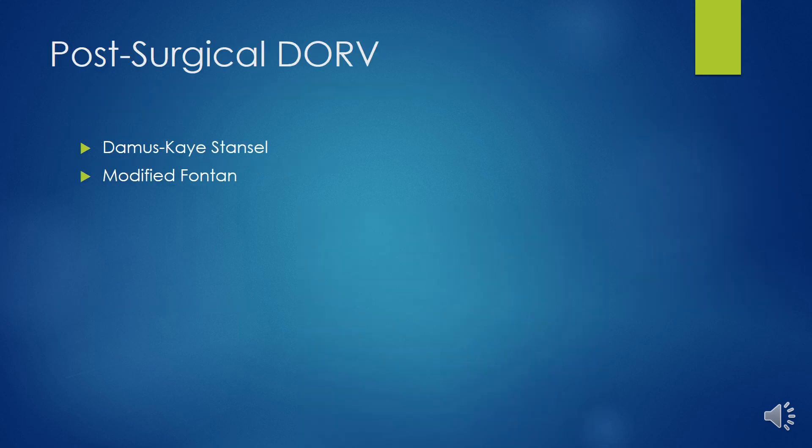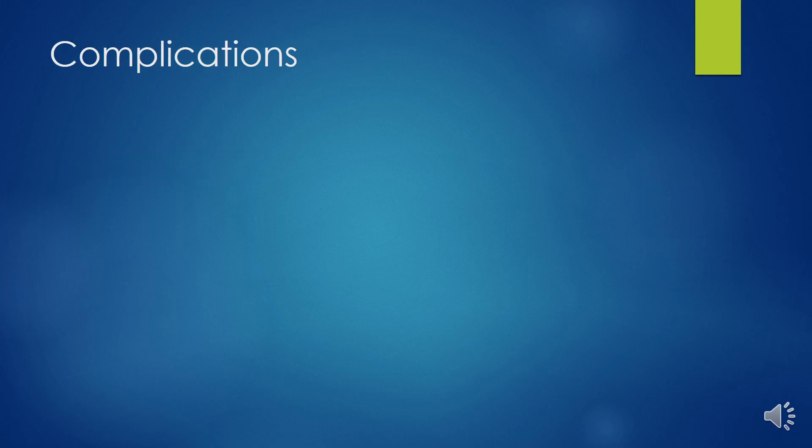Post-surgical DORV palliation includes systemic-to-pulmonary shunts and PA banding. Early complications associated with DORV repair include those secondary to suboptimal configuration of the intracardiac baffle, residual VSD, injury to the conduction system, subaortic obstruction from muscular shelf or restrictive VSD, and RVOT obstruction from the tunnel. Late complications include subaortic obstruction from fibrous tissue growth under the aortic valve.